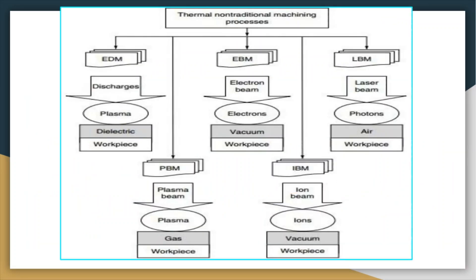A table of thermal non-conventional machining processes shows EDM, EBM, LBM, plasma beam machining (plasma arc machining), and ion beam machining, along with how the material removal action occurs for each process.